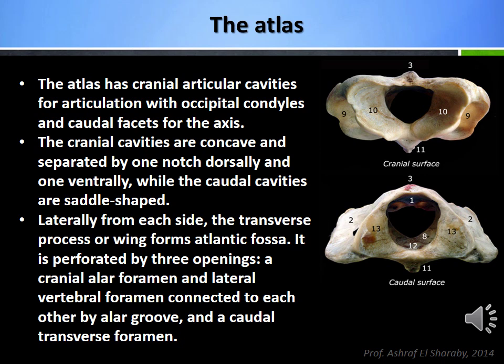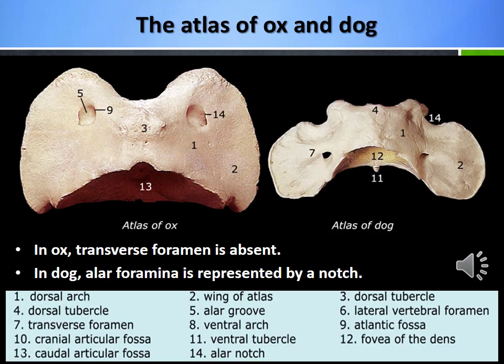Laterally from each side, the transverse process or wing of the atlas forms the atlantal fossa. It is perforated by three openings: cranially the alar foramen and lateral vertebral foramen connected to each other by the alar groove, and caudally the transverse foramen. To identify the atlas in ox, notice the absence of transverse foramen. In case of dog, notice the absence of alar foramen, which is replaced by alar notch.